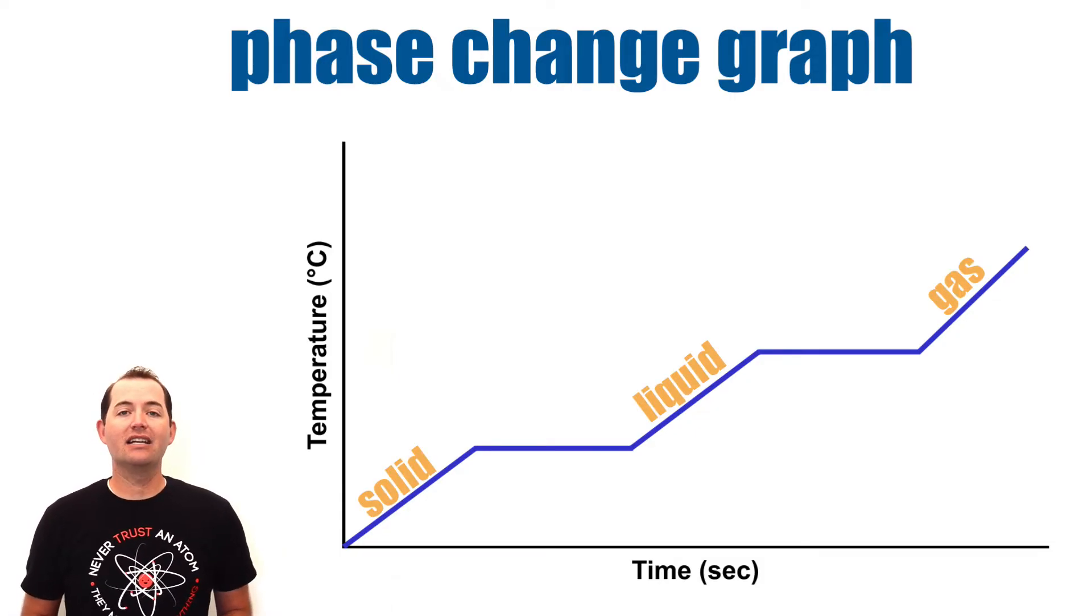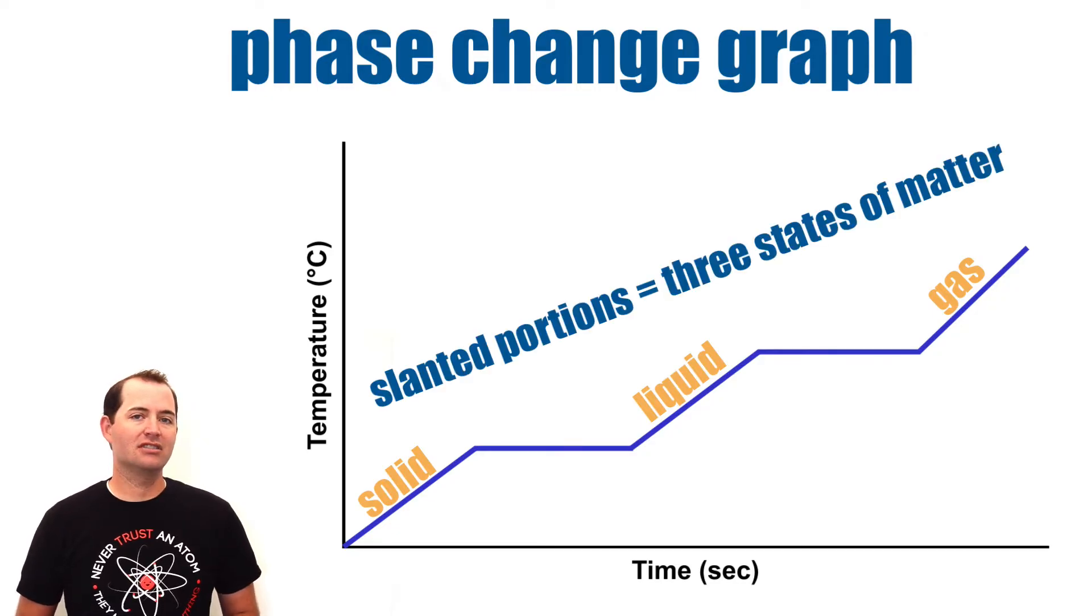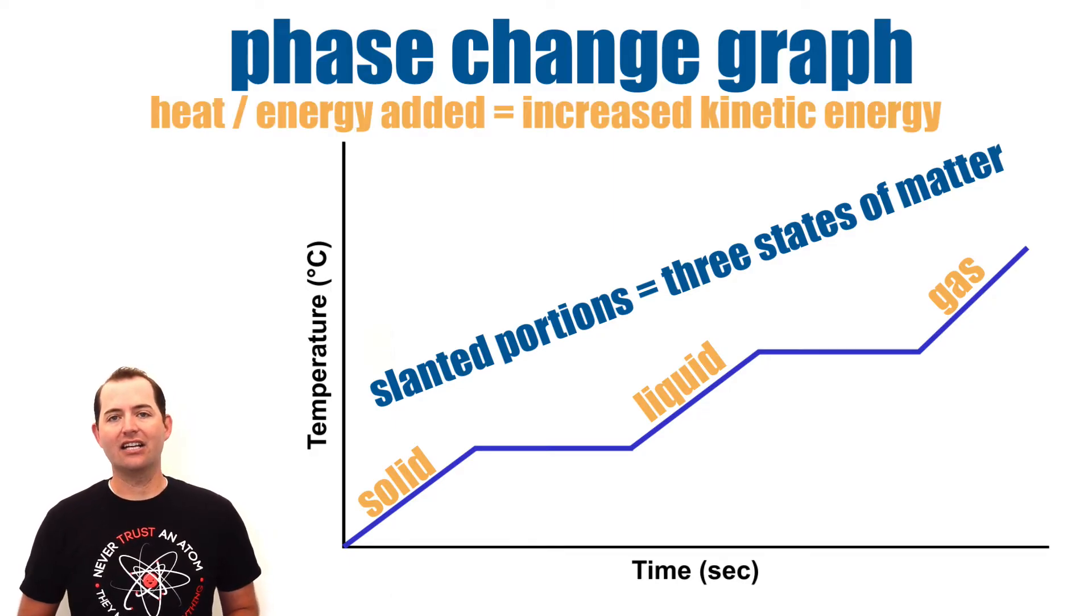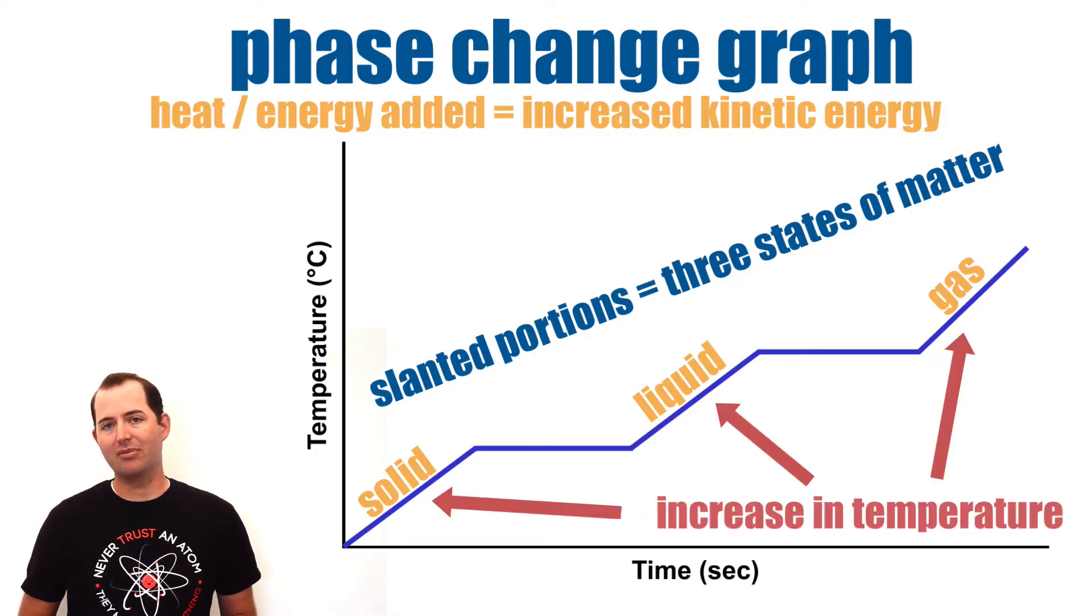These are represented as the slanted portions of these graphs. When substances are in these states of matter, as heat or energy is added, the kinetic energy of the substance will increase. This is shown as an increase in the temperature.